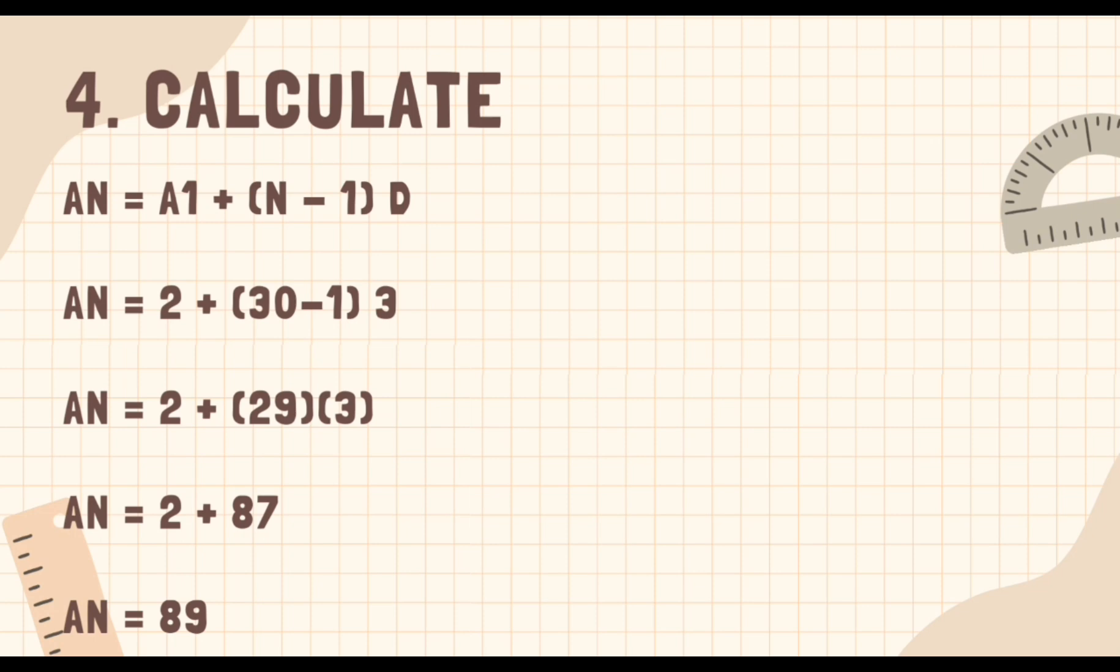And last is calculate a sub n. After plugging in the values, perform the necessary arithmetic operations to find the nth term a sub n. A sub n is equals 2 plus the quantity of 29 multiplied by the quantity of 3. A sub n is equals 2 plus 87. A sub n is equals 89.